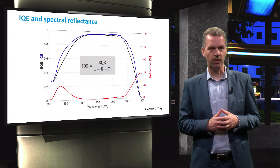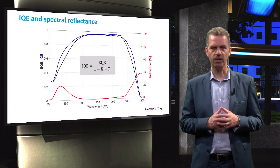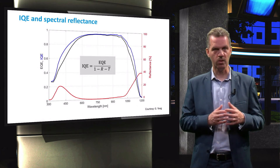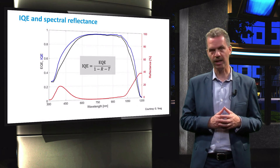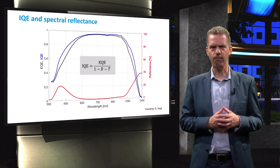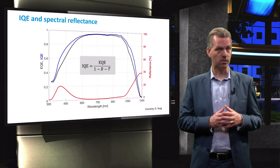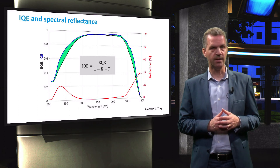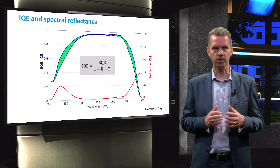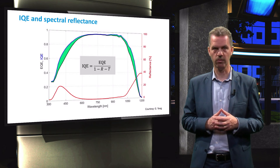The internal quantum efficiency is calculated by dividing the external quantum efficiency by 1 minus reflection minus transmission, which represents the absorbed part of the spectrum as we explained in the introduction. For a solar cell with a fully metalized back contact, the transmission can be neglected. As a result, the green area in this graph represents the fraction of potentially collected charge carriers that is lost to reflection, as the IQE only depends on the absorbed photons.